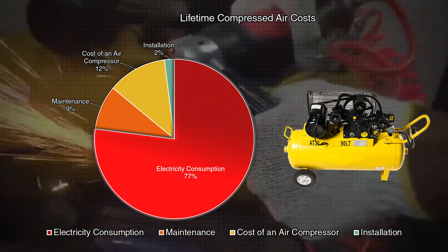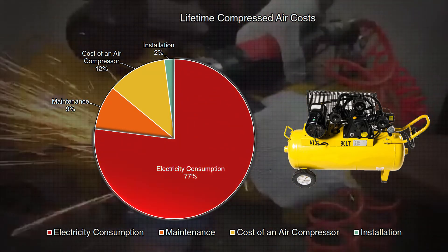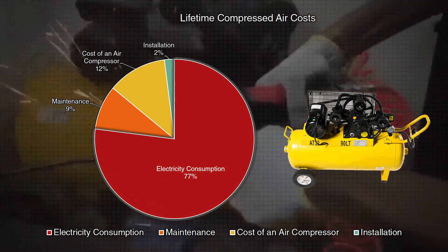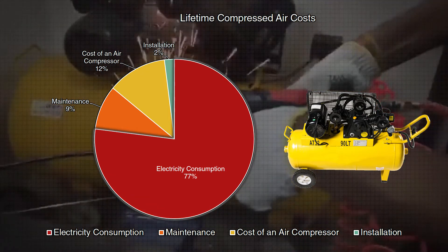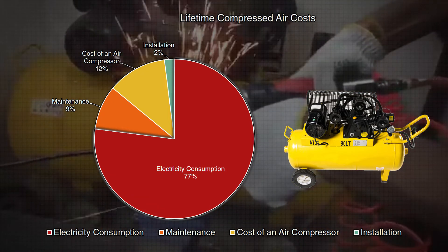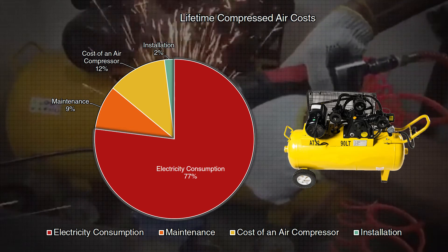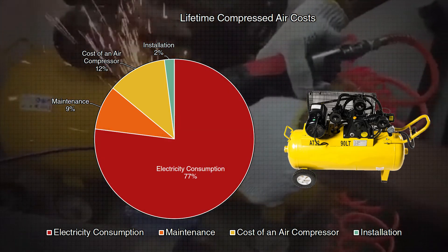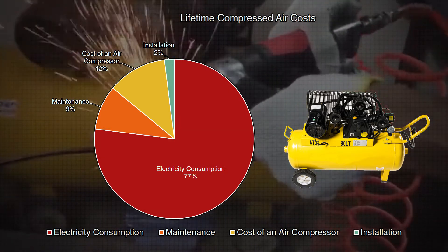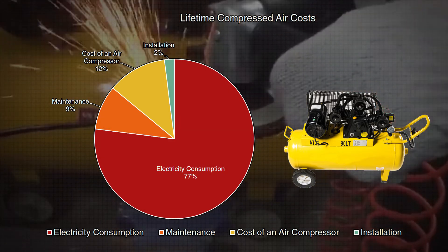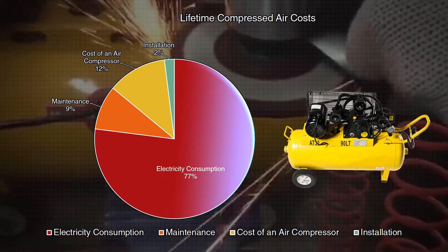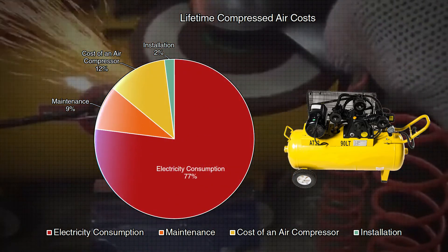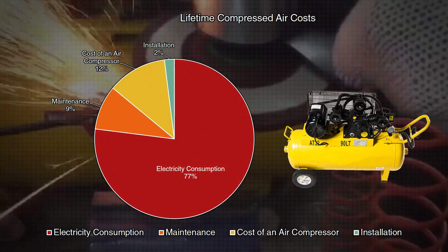This far exceeds all other costs, with the distant second highest cost being the maintenance and the labor required to ensure consistent performance and operation. By improving the operating efficiency of air compressor operation, there is a significant cost savings over time.